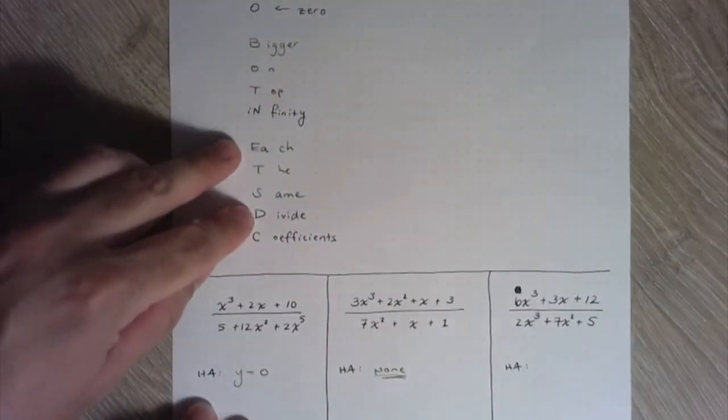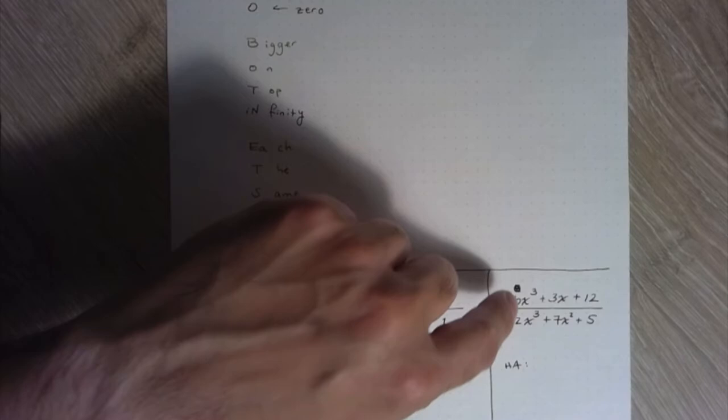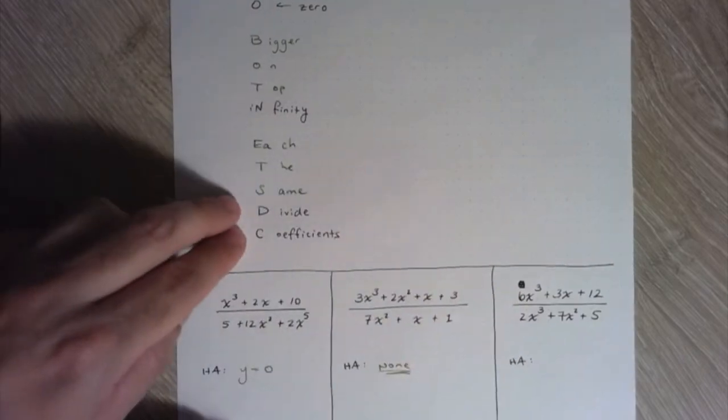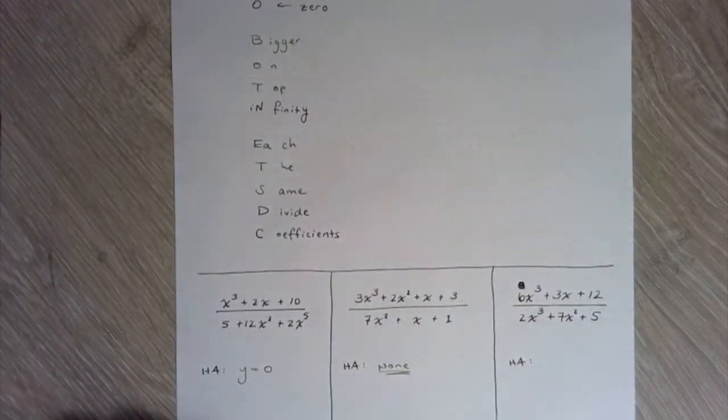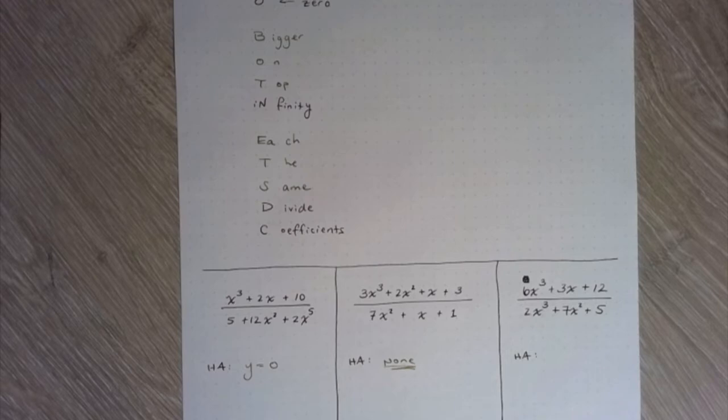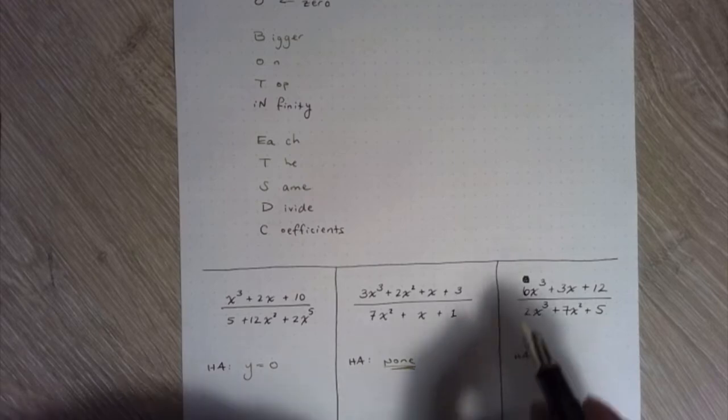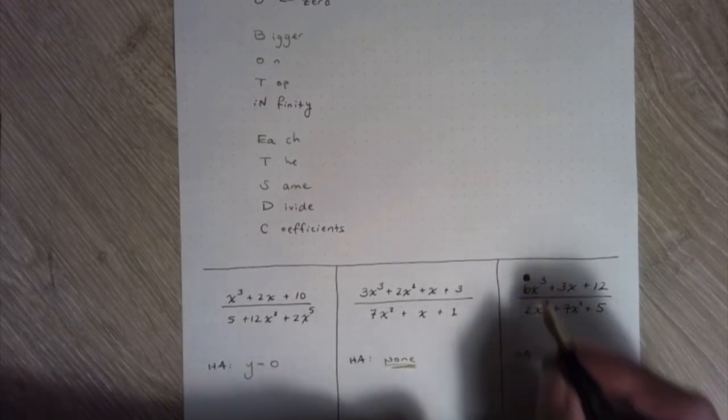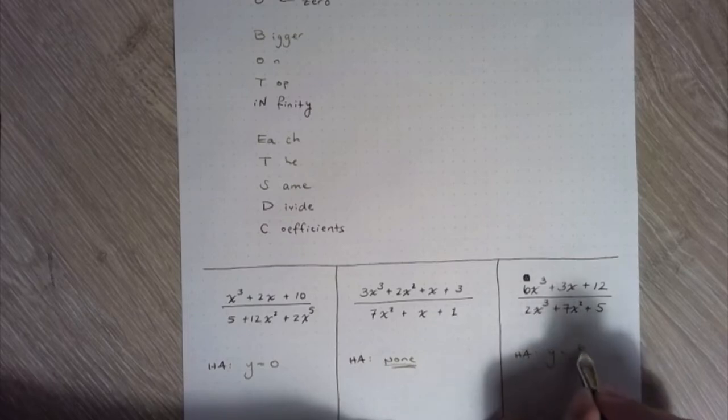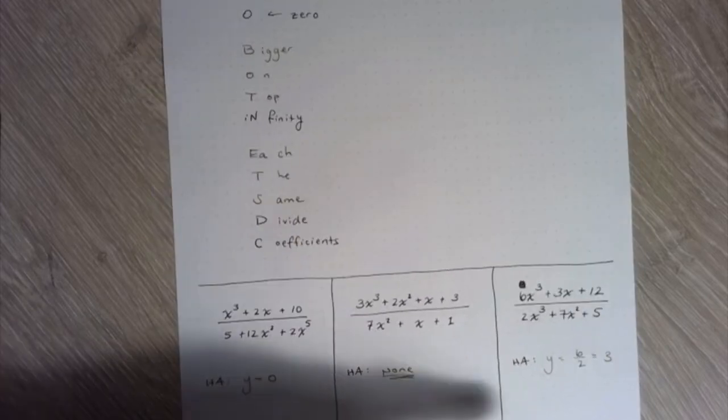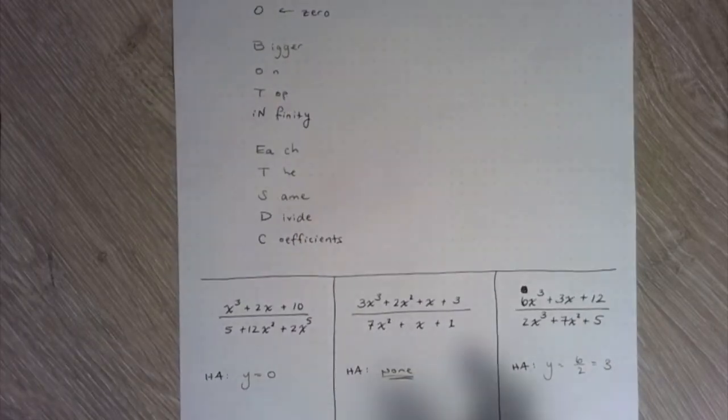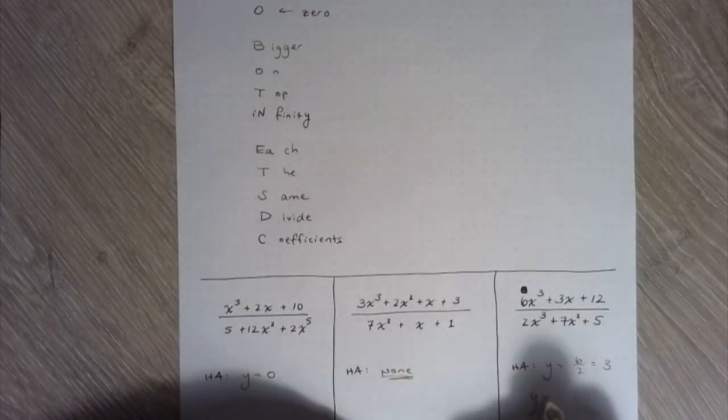So here we're in each of the same category. So we divide the coefficients. And the coefficients are the coefficients that occur with the largest exponents. So the horizontal asymptote here is 6 over 2 or a number that's better known as 3. So the horizontal asymptote here is y equals 3.